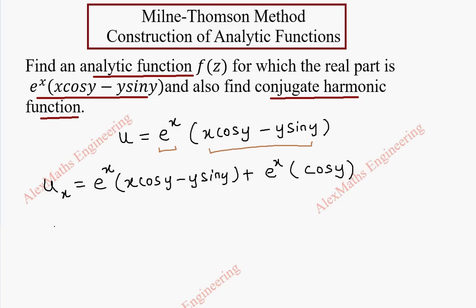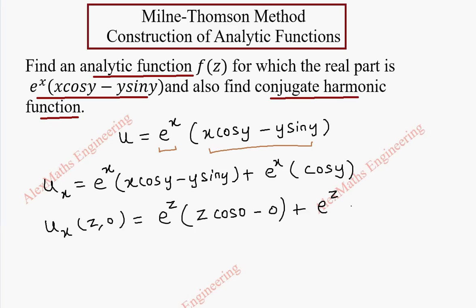Now we are going to find ux(z, 0). It means wherever x appears we replace it with z, and in place of y we substitute 0. So the term with (x·cos(y) - y·sin(y)) at y=0 becomes z·cos(0) - 0·sin(0) = 0. Then e^z·cos(0) = e^z·1, giving e^z·z plus e^z. Taking e^z common, we get e^z·(z + 1).